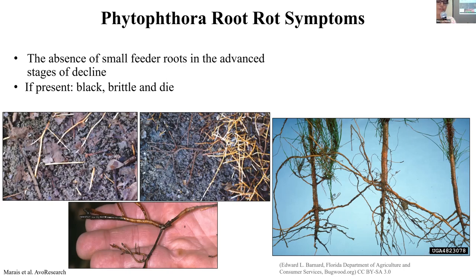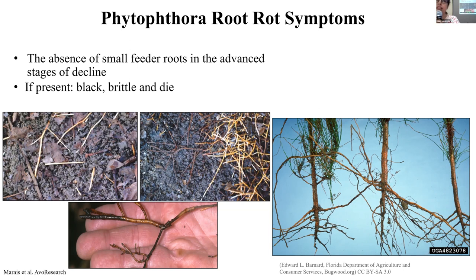In this picture you can see normal feeder roots that are creamy to whitish in color. To the right are roots infected by Phytophthora root rot. When roots are infected by this pathogen, you usually either don't see feeder roots at all, or if you do, they are black and brittle and eventually die. Phytophthora is not interested in major roots — it mainly affects the fine feeder roots. When those feeder roots are gone, they cannot do their job, which is water uptake and nutrient uptake. That's why you see those typical symptoms in the canopy of the tree.